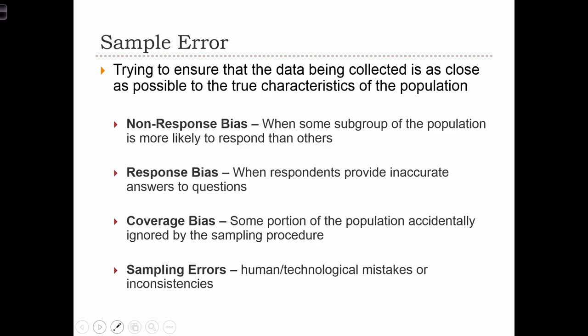There are many different sources of sampling error. These include non-response bias, which is when some subgroup of the population is more likely to respond than others. A typical example from social surveys is that those with more time on their hands are more likely to agree to be a participant in a survey. In many social surveys, we find that we oversample retired people or people who aren't in the workforce.